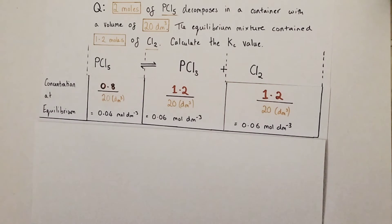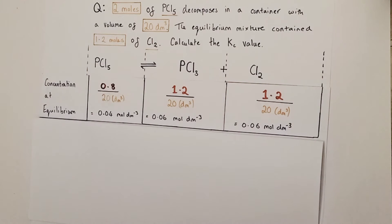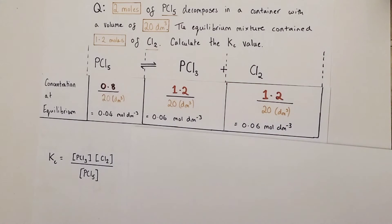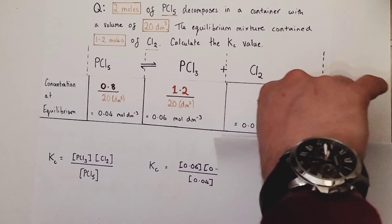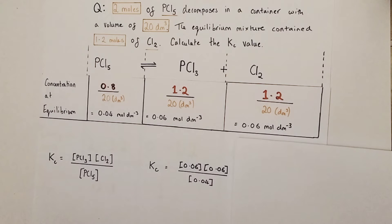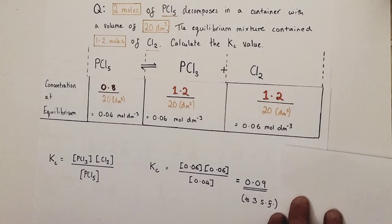Now we work out the Kc expression itself. The Kc expression is products over reactants — concentrations of products raised to the power of their coefficients divided by concentrations of reactants raised to the power of their coefficients. This equation is a 1:1:1 ratio, so no powers needed. It's simply the concentration of PCl3 times the concentration of Cl2 divided by the concentration of PCl5. Plugging in the numbers: 0.06 times 0.06 divided by 0.04 gives a Kc value of 0.09.